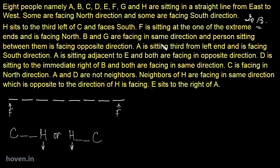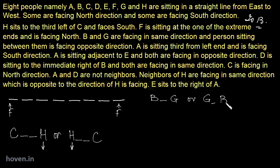B and G are facing in the same direction, and the person sitting between them is facing the opposite direction. We don't know which direction yet. The only thing we have right now is that B and G have somebody in between them — so it is either B-space-G or G-space-B. We don't know anything about the directions concretely at this point.